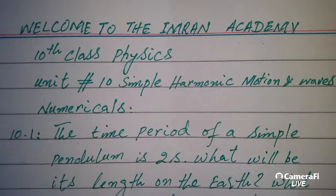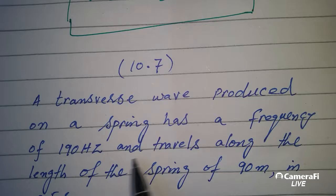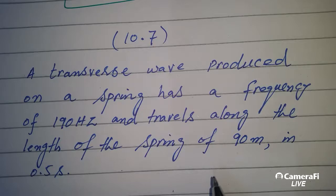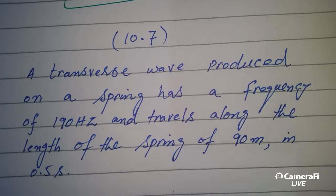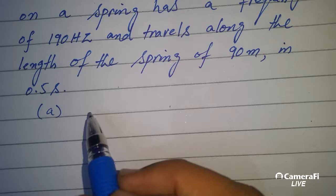In the last lecture we covered six numericals and today we will start from seventh numerical. The statement is: a transverse wave produced on a spring has a frequency of 190 hertz and travels along the length of the spring of 90 meter in 0.5 second. Part (a) is what is the period of the wave.